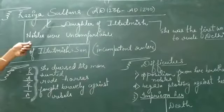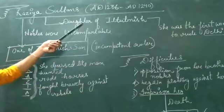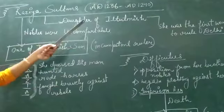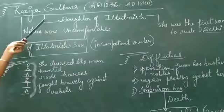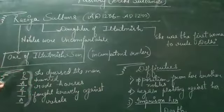She was the daughter of Shamsuddin Iltutmish. Before his death, he appointed his daughter as the ruler of Delhi. And she was the first woman to rule over Delhi.